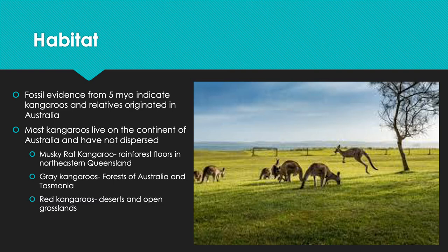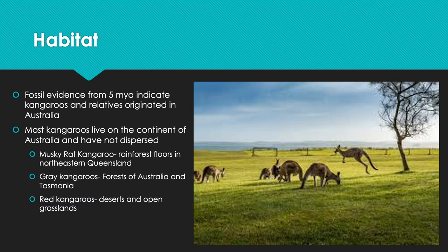Each species occupies a different habitat: gray kangaroos live in the forests of Australia and Tasmania, the antilopine kangaroo is found in the monsoonal eucalyptus woodlands of extreme northern Australia, and red kangaroos live mostly in central Australia. Fossil evidence suggests that as early as five million years ago, kangaroos originated in Australia, which had moved close to its present location due to continental drift and was not connected to other land masses, so kangaroos were not geographically dispersed elsewhere.